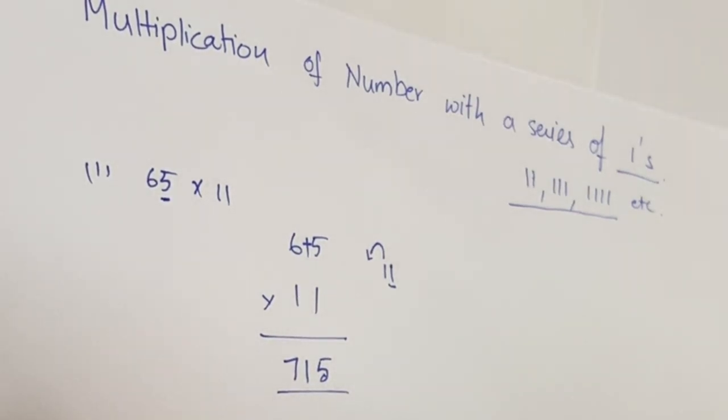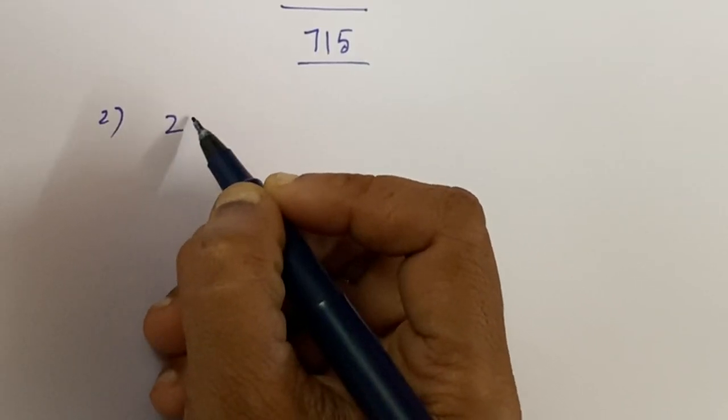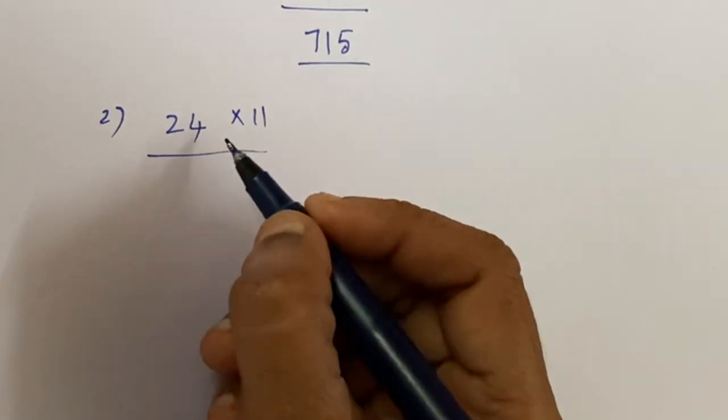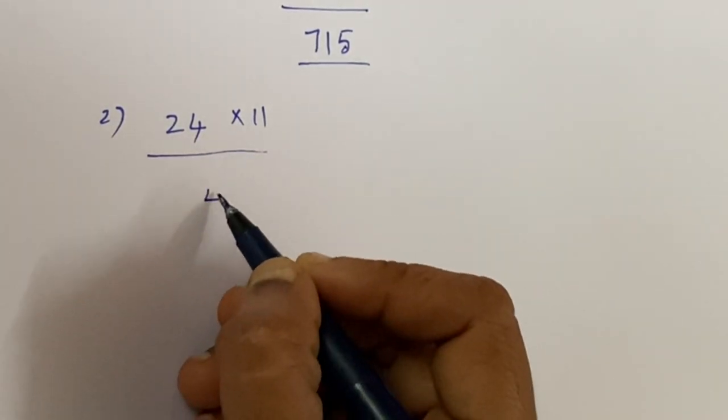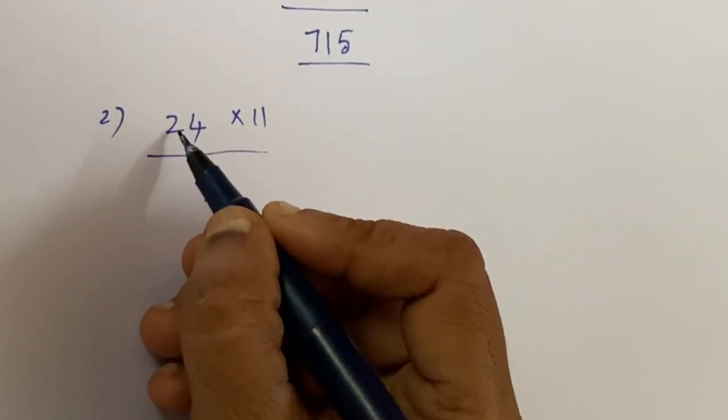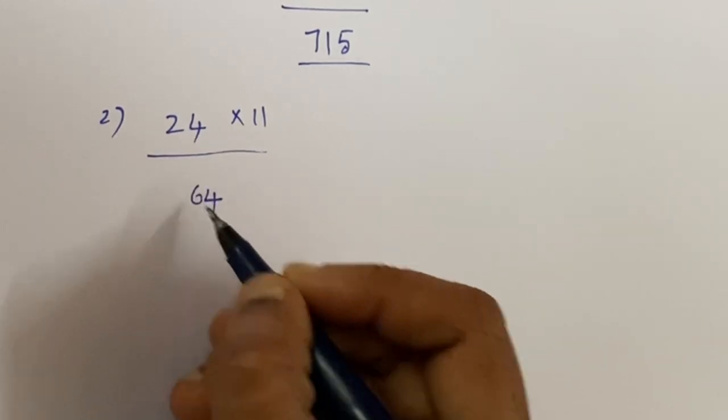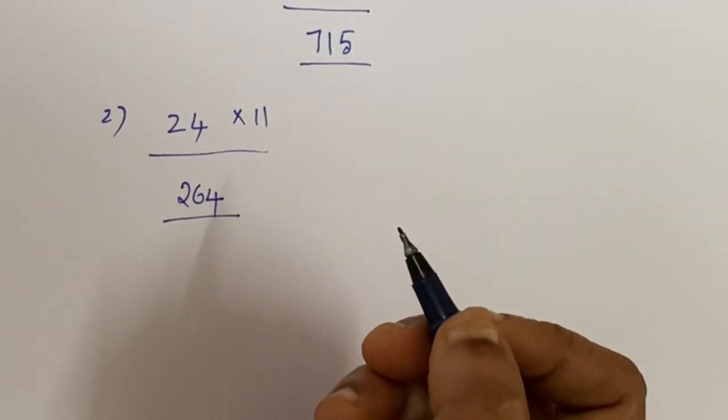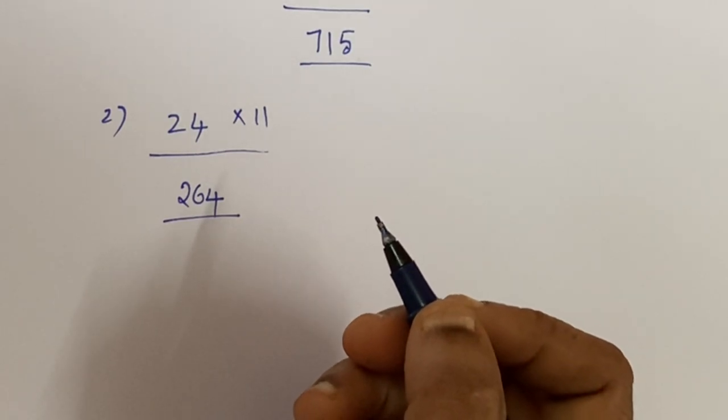Let's see a simple example: 24 into 11. Here you have to take the units place as it is, that is 4. Next you have to add 2 plus 4, that is 6. So next, 2 as it is. That is 264. You can calculate in this way within seconds.